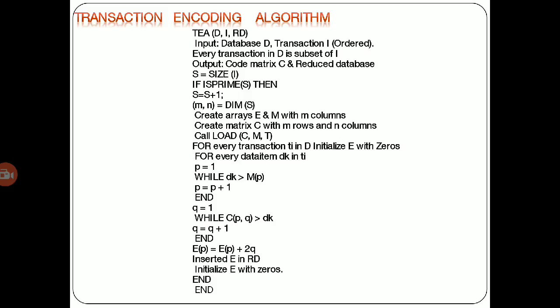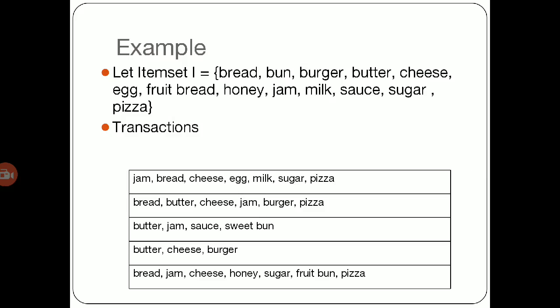It also checks for the dimension and load condition. In the dimension, it checks whether the transaction externally has some branches or not. If not, then it produces a load call. Otherwise, some while loops are executed.